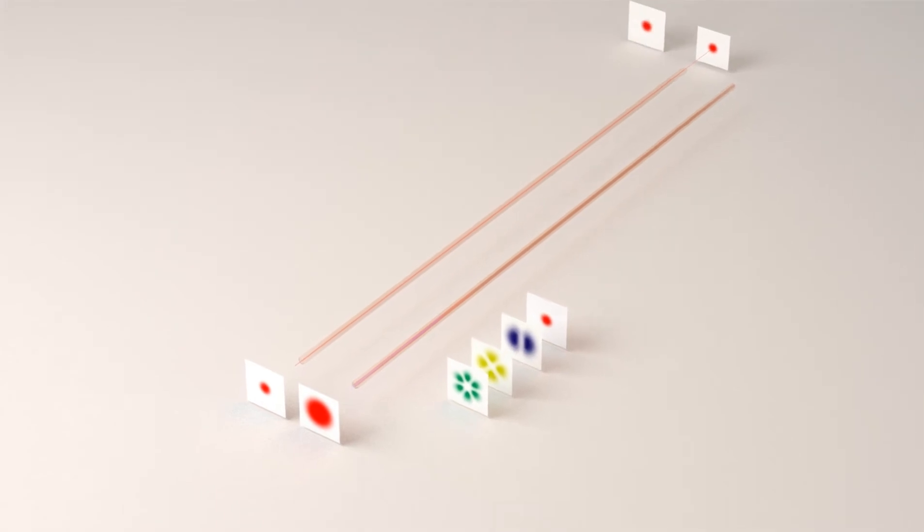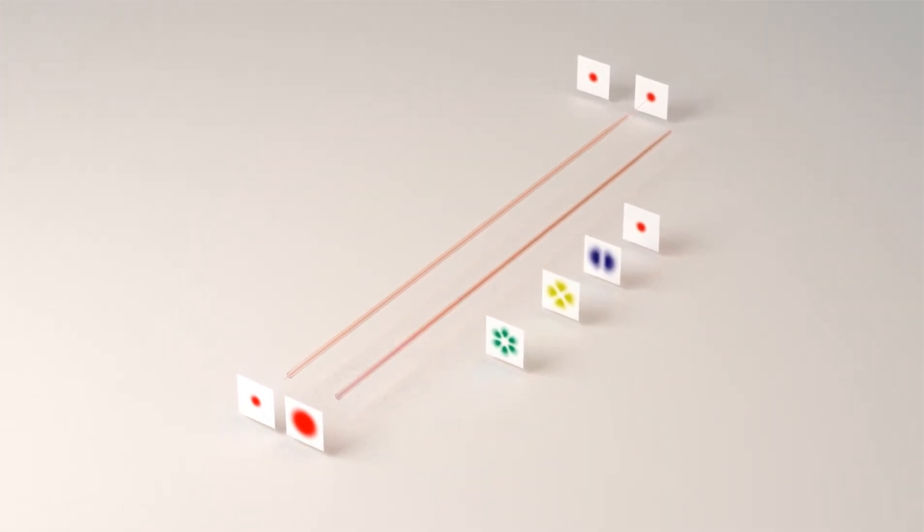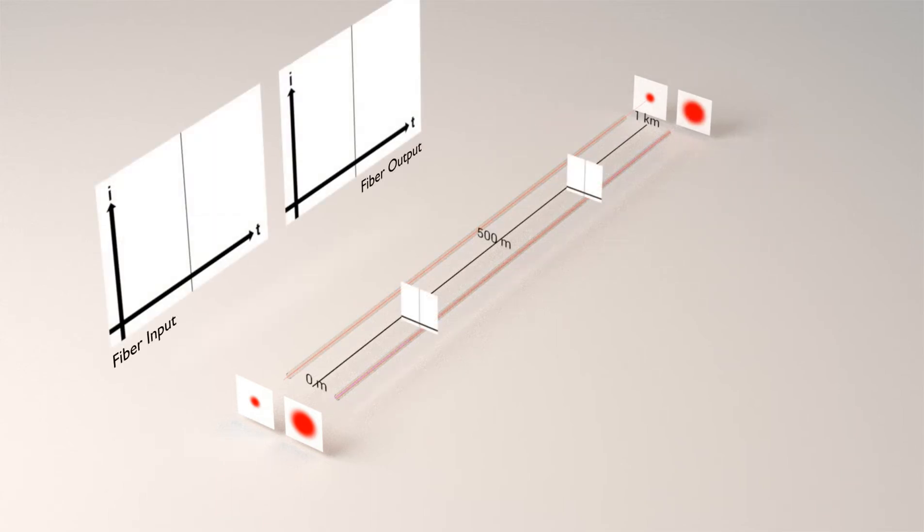Within the fiber, modes travel through distinct optical paths, therefore having different effective velocity. At a given length of fiber, modes arrive at different times. This phenomenon is called modal dispersion.